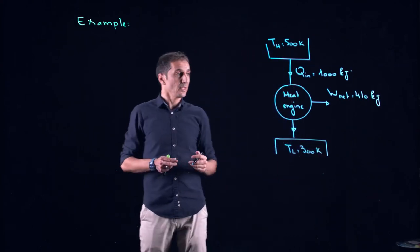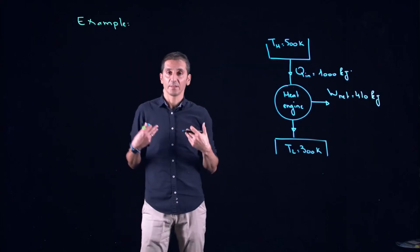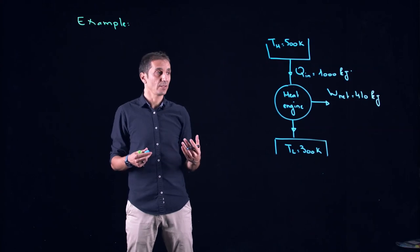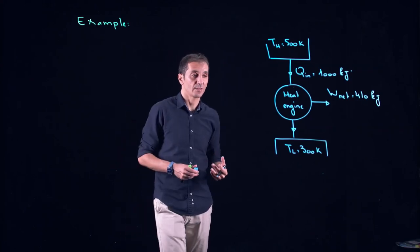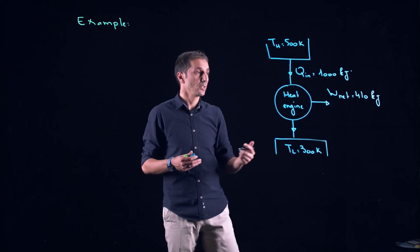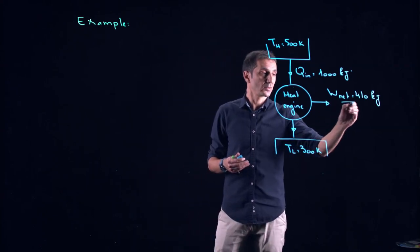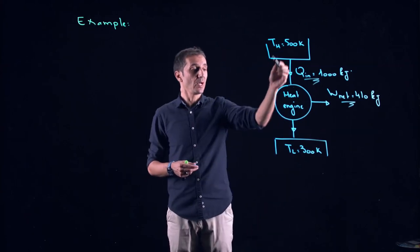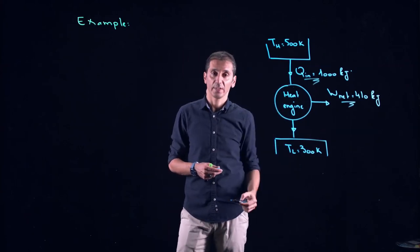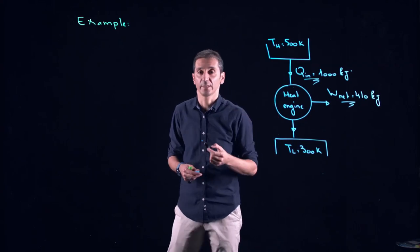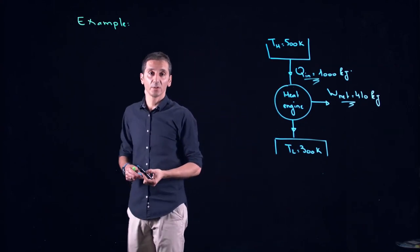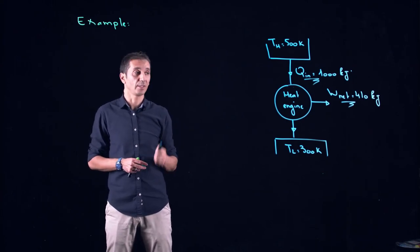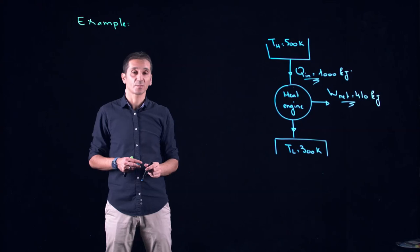So basically the idea here is that we have an inventor. I'm an investor and this inventor came to see me telling me that he or she has developed a heat engine with work net of 410 kilojoules receiving QN of 1000 kilojoules and running between the two heat temperatures of 300 Kelvin and 500 Kelvin. And my role or my job is to evaluate this claim and to see if I have to put money on the table and invest in this project.